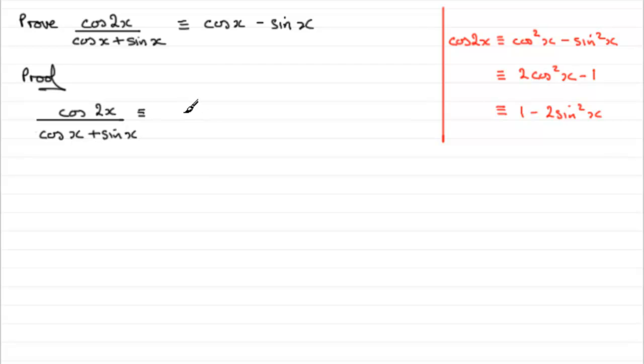Cos2x then is equivalent to cos squared x minus sine squared x, all divided by cosx plus sinx. We'll leave this alone on the bottom because we've got our cosx and sinx terms, but where do we go from here?